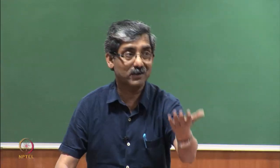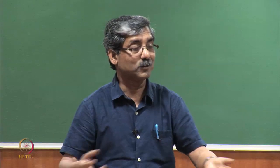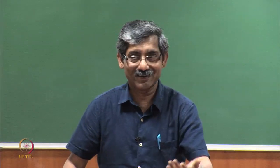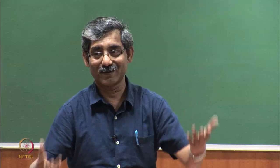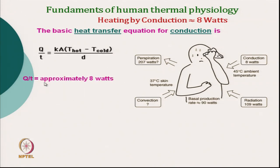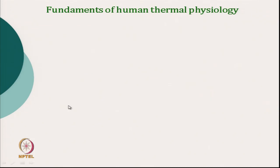Consider if we do not perspire — if perspiration stops for some reason — our body core temperature will start increasing and we cannot survive. At the same time, if we use wrong clothing that does not allow body sweat to evaporate, we will not feel comfortable. Conduction, as we have seen earlier, is always insignificant — about 8 watts — calculated using T_hot of 318 K and T_cold of 310 K using the same equation.